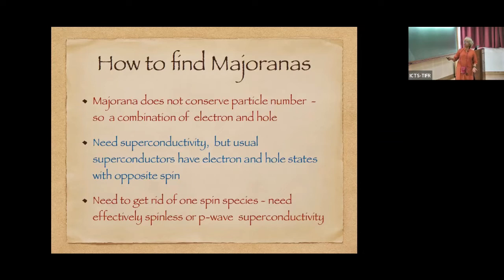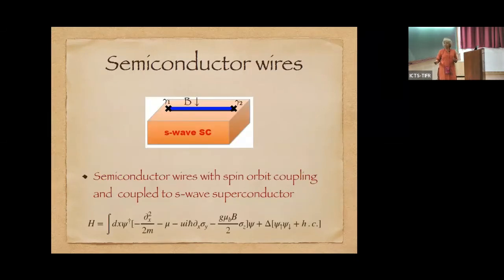Where would one find these Majoranas? One can show that the Majorana particles do not conserve particle number. So you would expect that they are a combination of electron and hole. So you would need superconductivity. But usually S-wave superconductors have spin up electrons and spin down holes. They have electron and hole states with opposite spin, but you need to get rid of one species and what you need are what are called P-wave superconductors. What can be shown is that such a model can be created simply by having semiconductor wires proximity coupled to an S-wave superconductor, as long as you allow something called spin orbit coupling in these wires. And then in the presence of a magnetic field, it basically reproduces the Kitaev model for you.